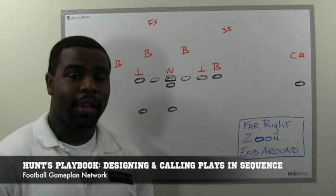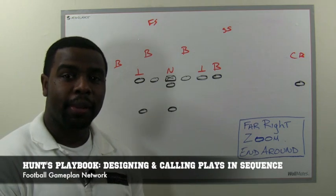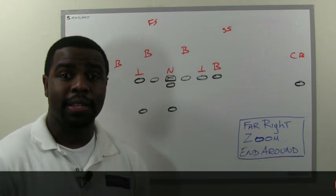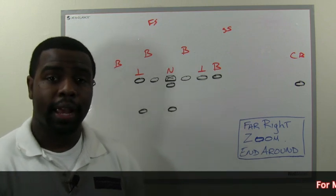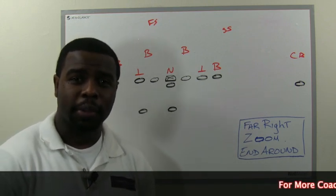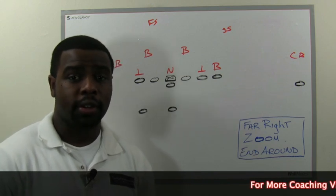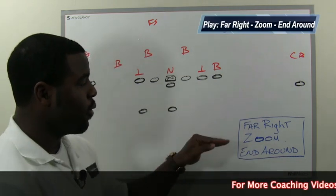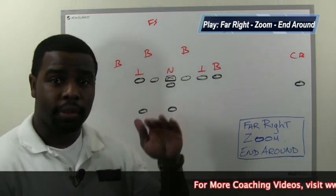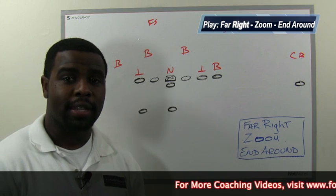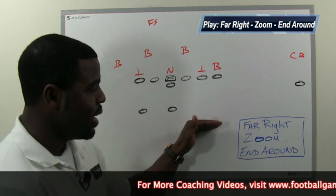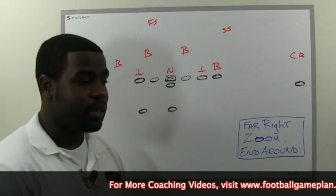Here's a play we're going to describe. It's all about designing a play and building off of the same exact play, utilizing the same exact motions and blocking assignments. Usually your blocking assignments will alter a little bit for play action pass and regular drop back passes. The play we're going to work with is called Far Right Zoom End Around, and after this we're going to have the play action, the drop back pass — different ways you can utilize this play as far as designing and sequencing your offense.